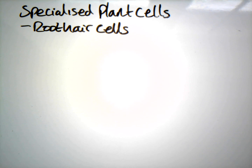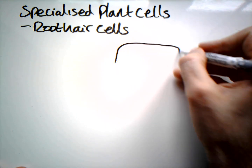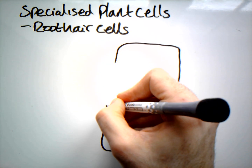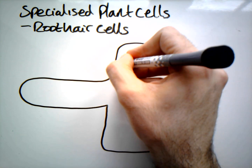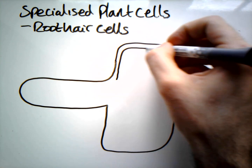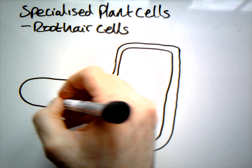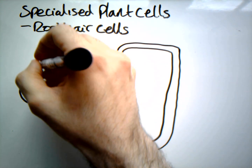Let's talk about specialized plant cells — specifically the root hair cell. Our root hair cell is found in the roots of the plant, as the name would indicate. The roots are absolutely covered in these, and they have this very large, unusual extension: this hair-like structure called the root hair.